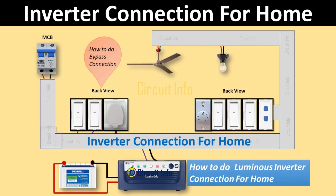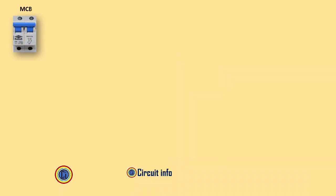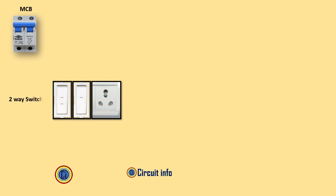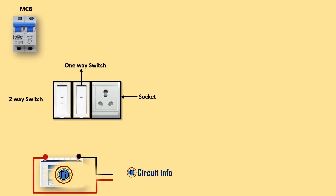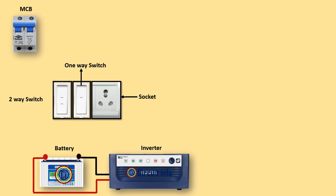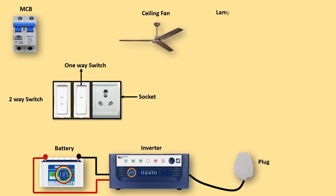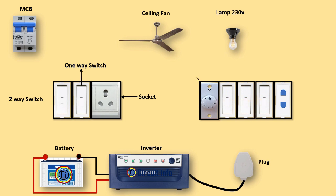Hi friends, welcome to Circuit Info YouTube channel. In this video we can learn inverter circuit for home. What is an inverter? An inverter is a power electronics device which is used to convert DC voltage into AC voltage. The inverter is a static device — it can convert one form of electrical power into another form of electrical power, but it cannot generate electrical power.